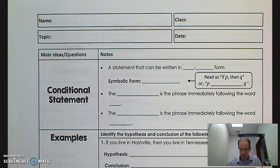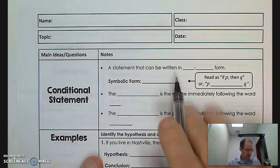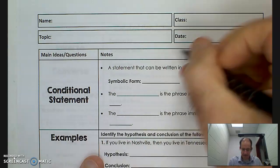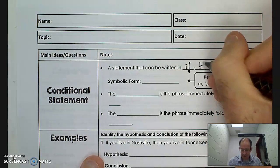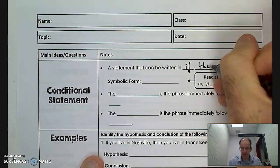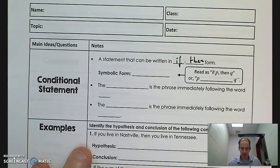Today we're going to talk about conditional statements. If something is true, then the other thing is also true. One thing depends — it's conditional upon the other thing. So a conditional statement is a statement that can be written in if-then form.